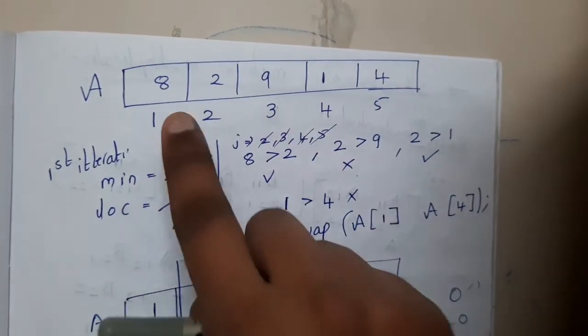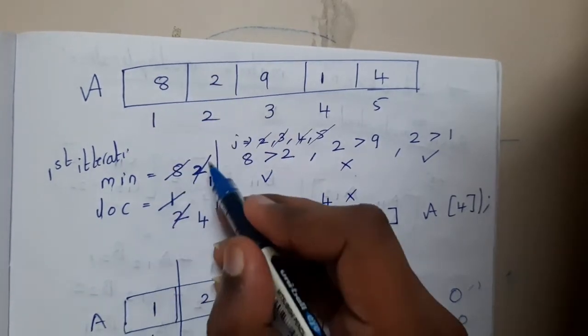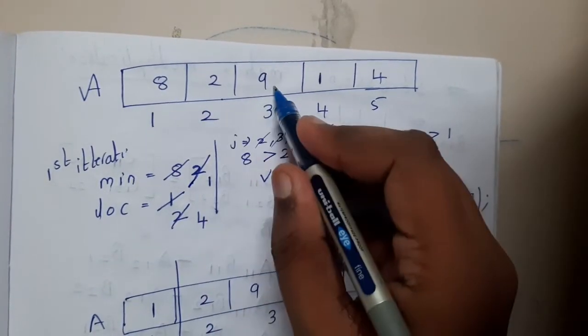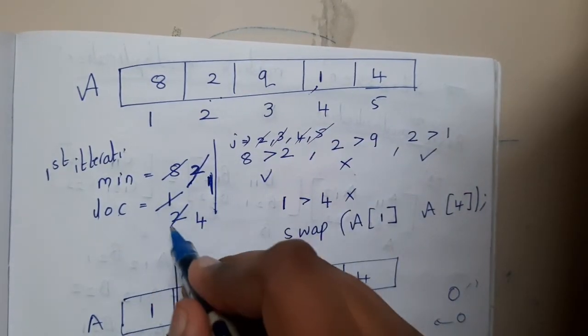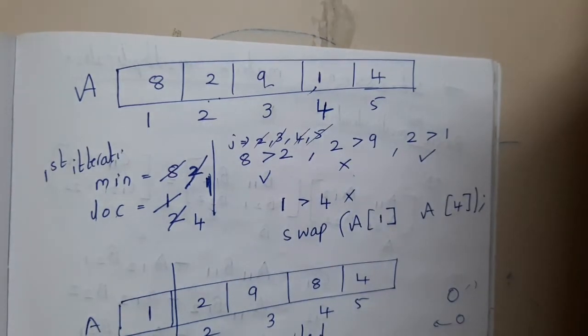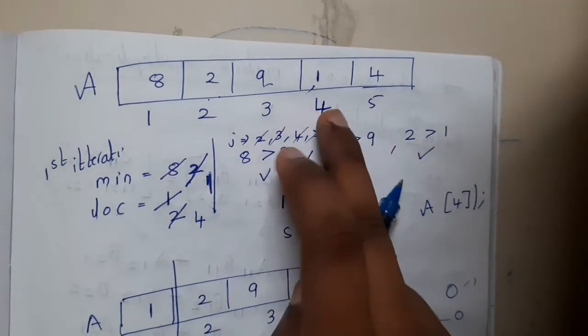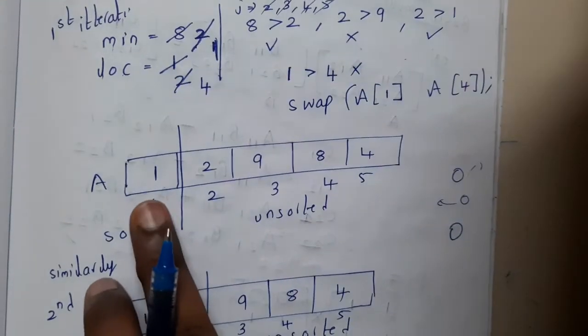Initially, you start with minimum as 8. Comparing with 2, minimum becomes 2. Then 2 with 9 - no change. 2 with 1 - there is a change, minimum becomes 1. The location indicates where the exact element is, and you swap it with k. The result will be 1, 2, 9, 8, 4.